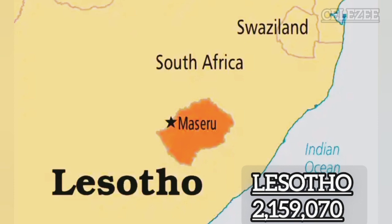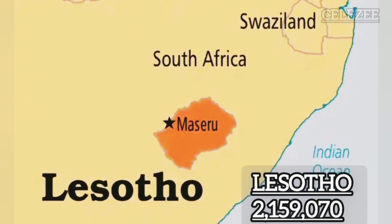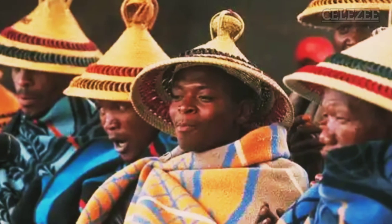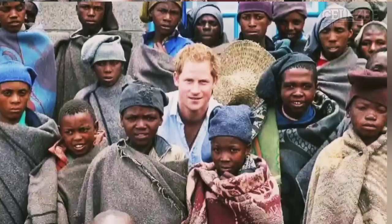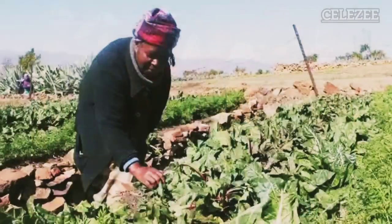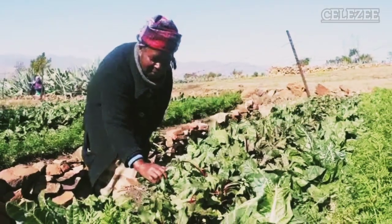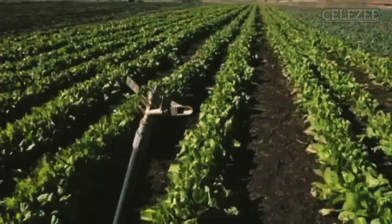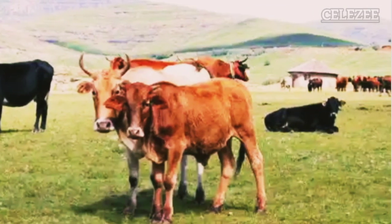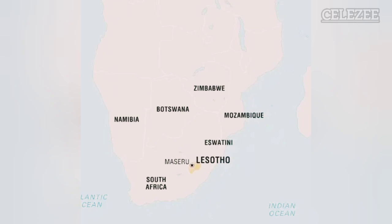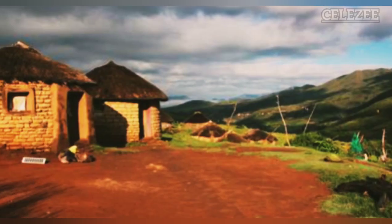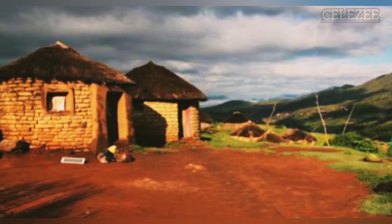Number 10: Lesotho. Lesotho, a landlocked southern African country completely surrounded by South Africa, has a population of 2,159,070. It is predominantly an agricultural nation, with farming and livestock sectors playing a significant role in its GDP. Manufacturing also contributes substantially to its economy.